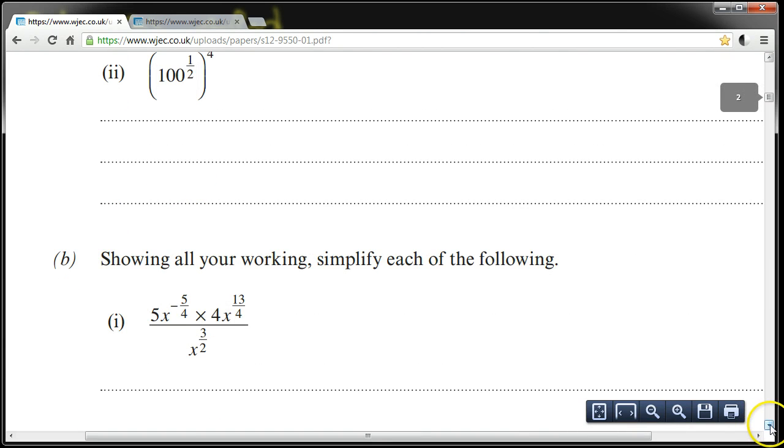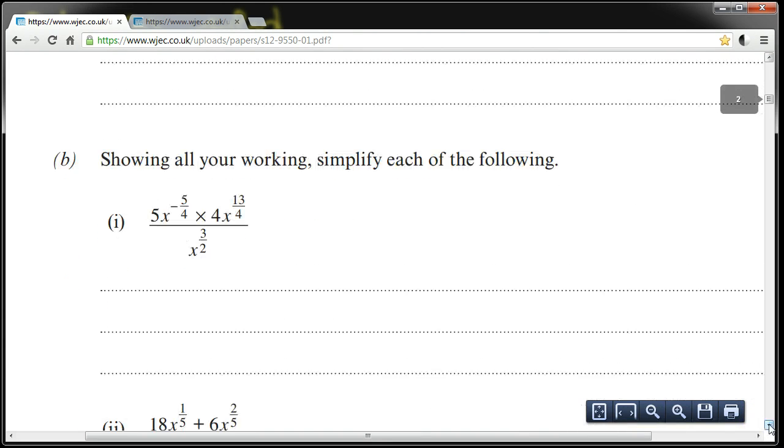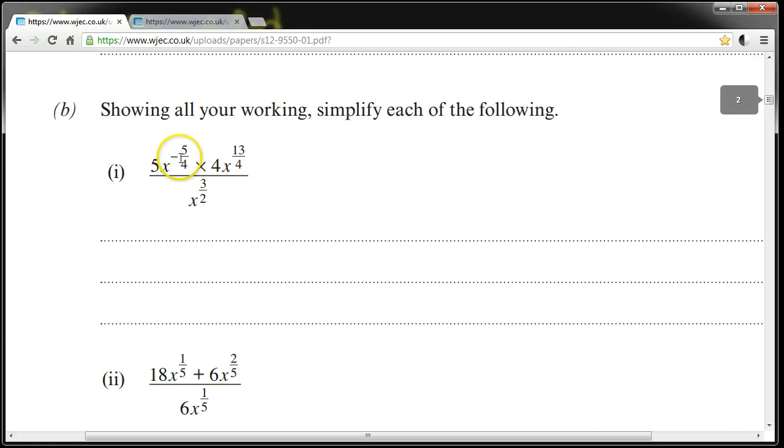Showing all your working, simplify each of the following. 5x to the minus 5 over 4 times 4x to the 13 over 4, all divided by x to the 3 over 2. Part 2, 18x to the 1/5 plus 6x to the 2/5, all divided by 6x to the 1/5.